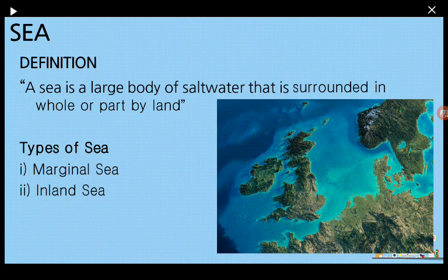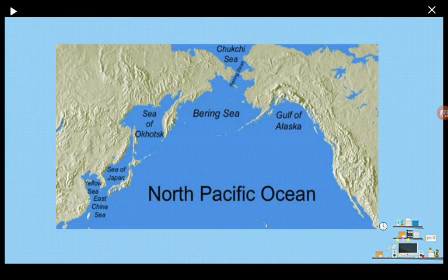Sea can be divided into two types. Number one is marginal sea and number two is inland sea. If you see here in the image you will find lots of seas — Bering Sea, Sea of Japan, Yellow Sea, East China Sea. These are some of the seas present on the Earth's surface, and you will find that they are closer to the continent.